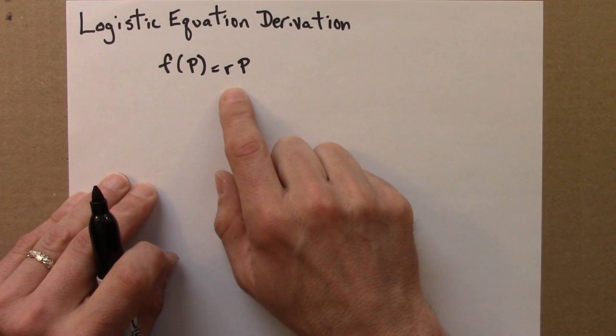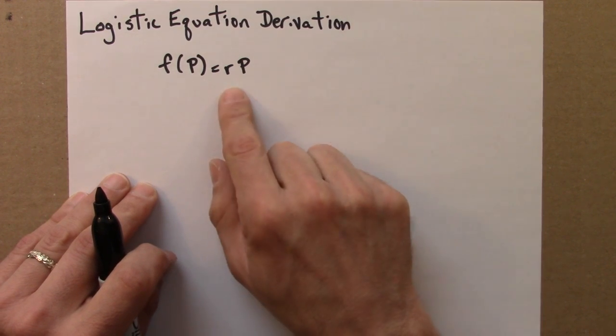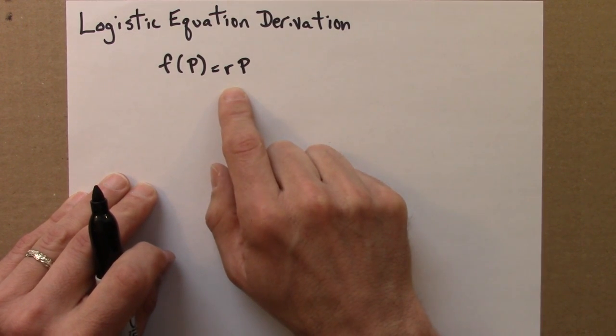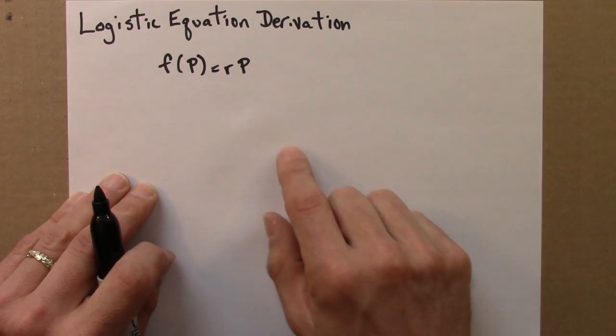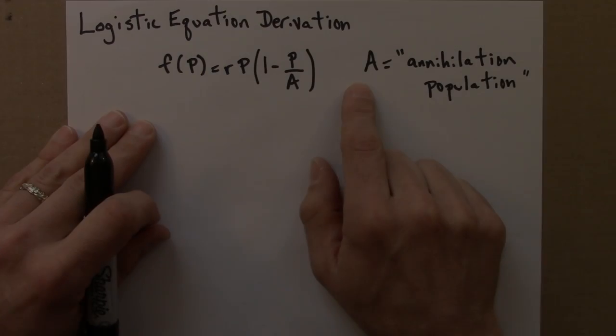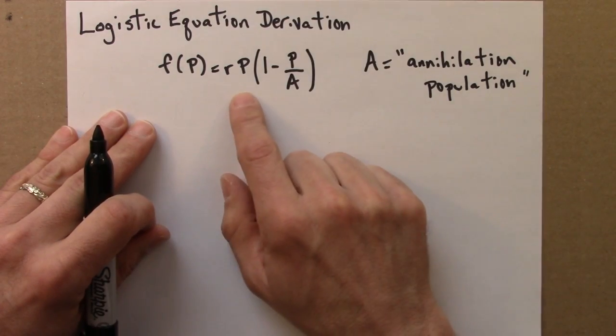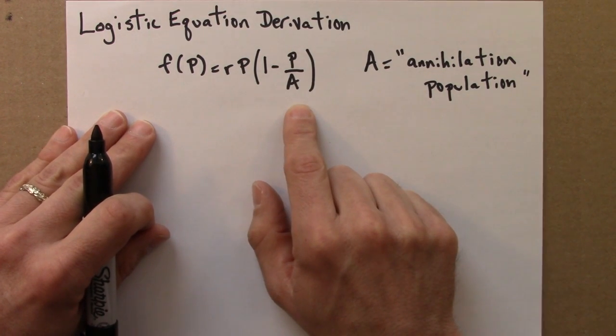So we'd like to modify this in some simple way to account for the fact that there's going to be some limit to the number of rabbits or whatever it is we're studying. So we'll do that by adding a term to this equation.